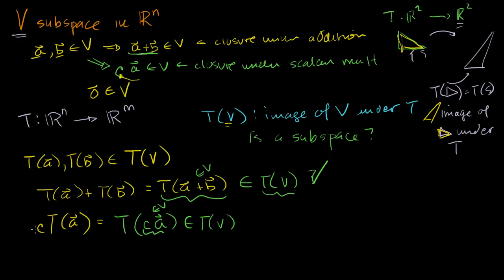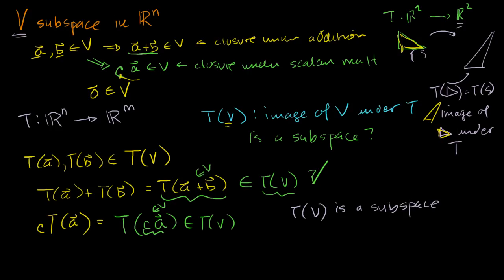You can set the scalar equal to zero — the zero vector is a member of V, so the transformation of zero gives the zero vector. If you multiply any vector by zero you get the zero vector, so the zero vector is definitely a member of T(V). We conclude that the image of V under T is a subspace — a useful result we'll be able to use later on.